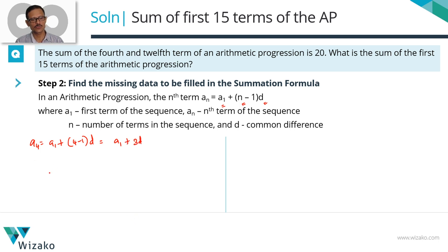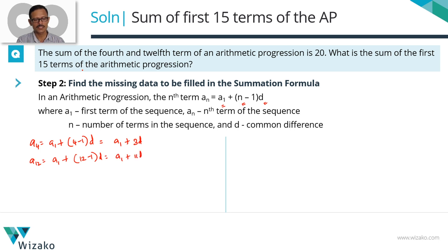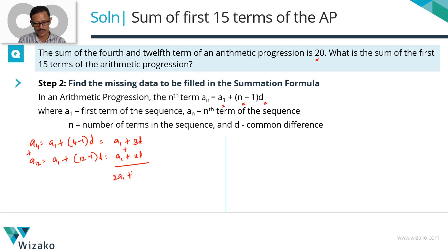Let's run through the same exercise for A12. A12 equals A1 plus 12 minus 1 times d, which is A1 plus 11d. The sum of the fourth and the twelfth term is 20, so we're going to add these two expressions. Adding them gives 2 times A1, and 3d plus 11d is 14d. So 2A1 plus 14d equals 20.